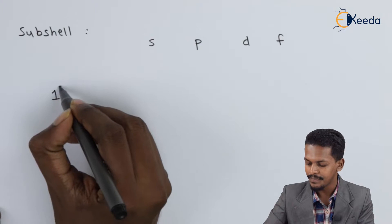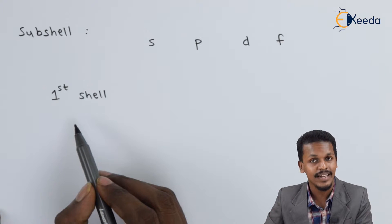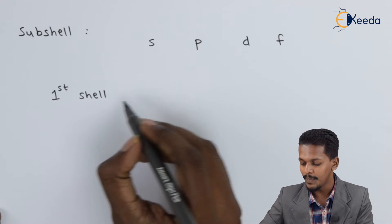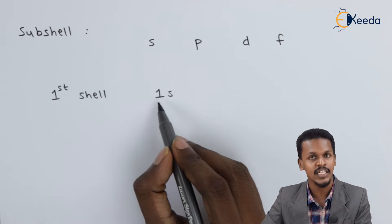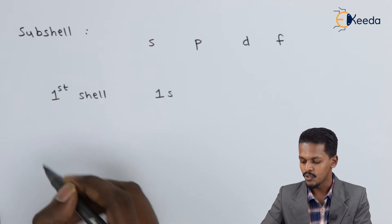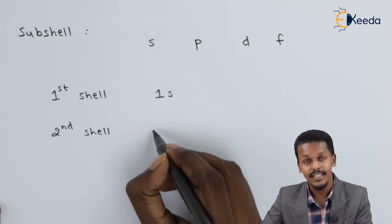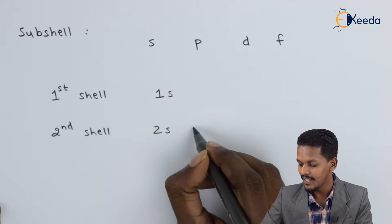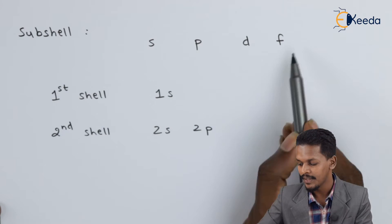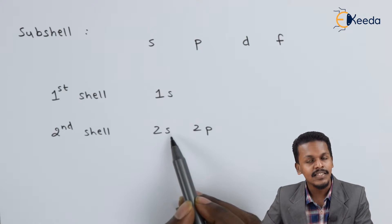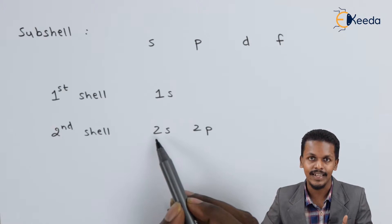Suppose we are talking about the first shell, where the principal quantum number N is equal to 1. The first shell will have one sub-shell, that is 1S — where 1 stands for the principal quantum number. The second shell consists of two sub-shells: 2S and 2P. This indicates that the S sub-shell and P sub-shell both belong to the second shell, that is the L shell.